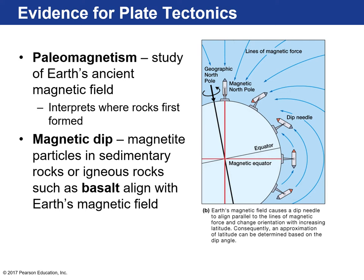That led to the study of paleomagnetism — a way of studying the Earth's ancient magnetic fields. It also helps us interpret where rocks first formed. Think of these dip needles as magnetite minerals pointing towards magnetic north. If you have a volcanic eruption, all the magnetite grains will point in a particular direction, and we can calculate that angle and then figure out the latitude where that eruption occurred in Earth's past.